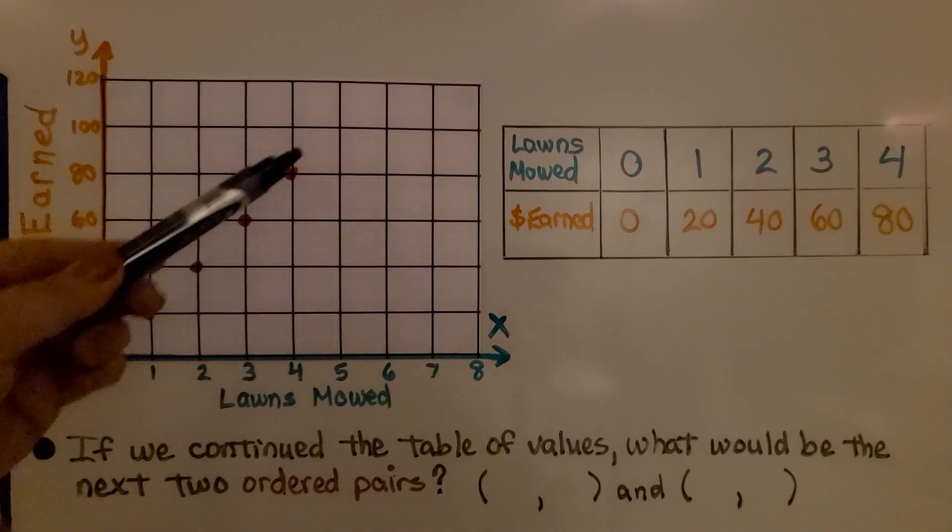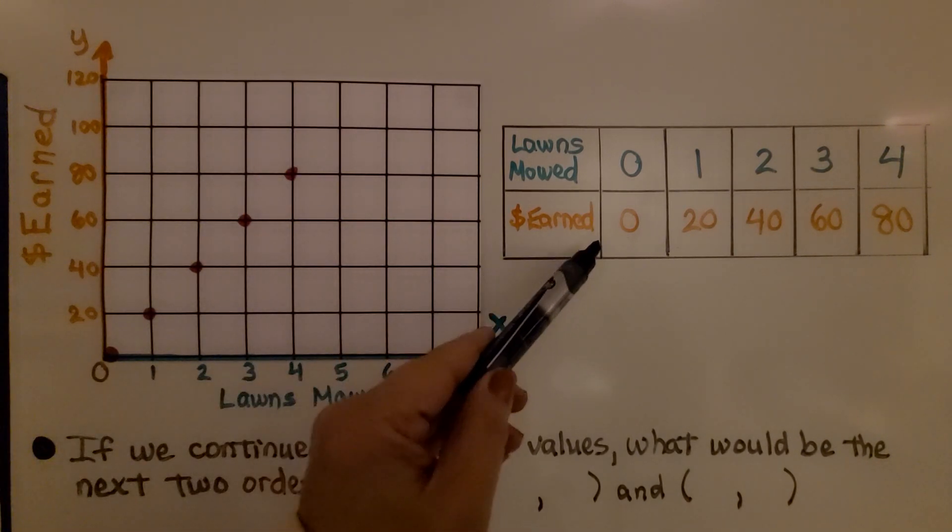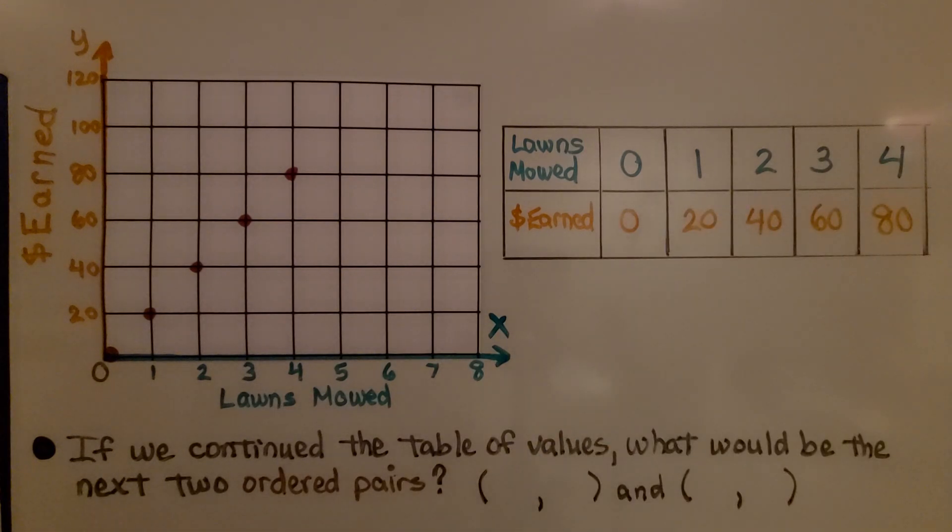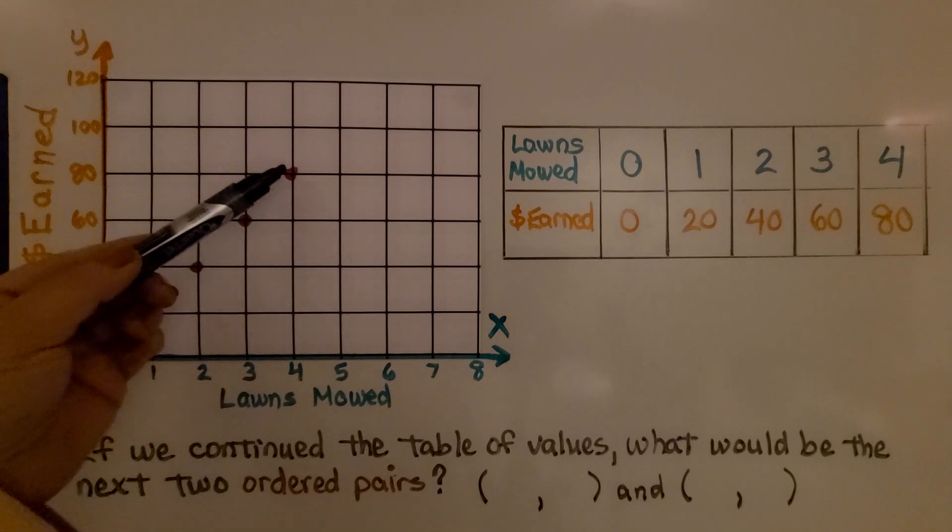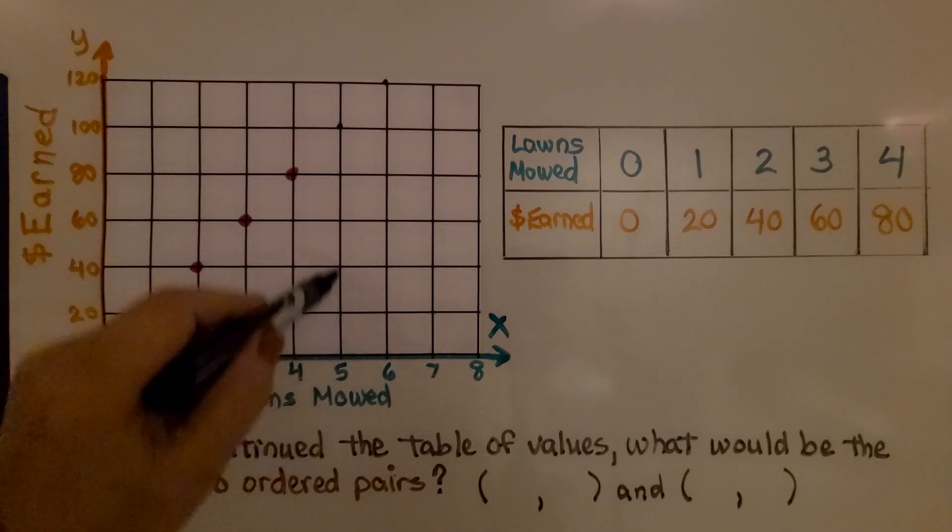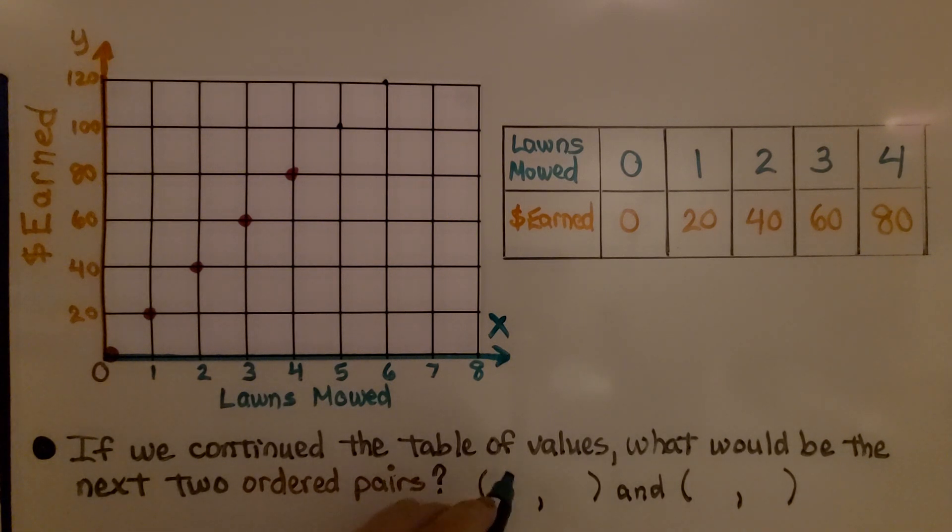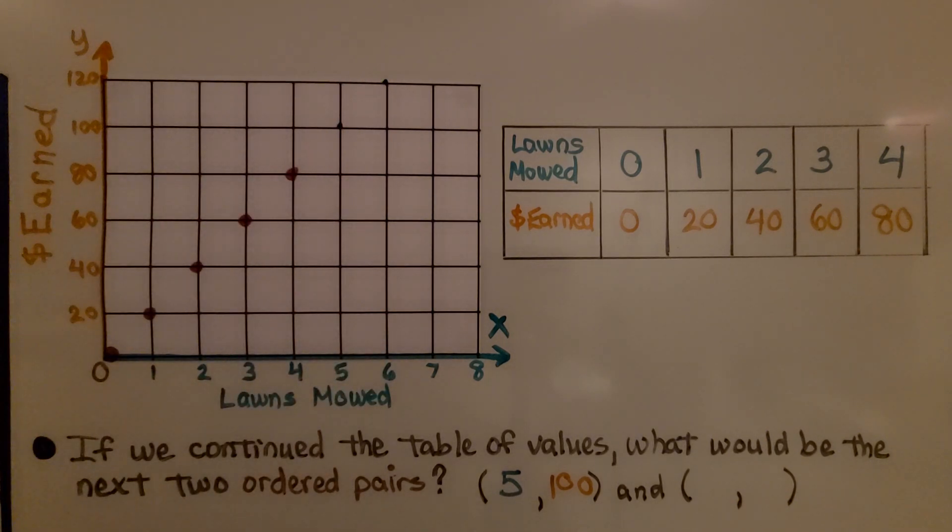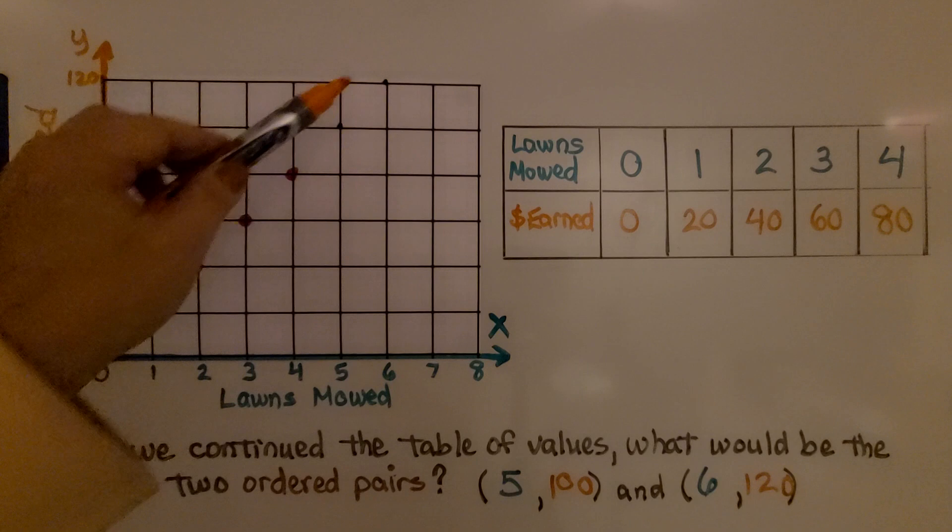So here we have the points graphed on a coordinate plane. Here we have our table. If we continued the table of values and added more data to the right side here, what would be the next two ordered pairs? We can look at our graph. We can see it's making a straight line. The next point would be right here, and the one after that would be right here. That means we would have 5 for x and 100 for y, so (5,100). What would be the next one? It would be 6 for x and 120 for y, (6,120). Because this makes a straight line, we can see what the next values would be for the data.